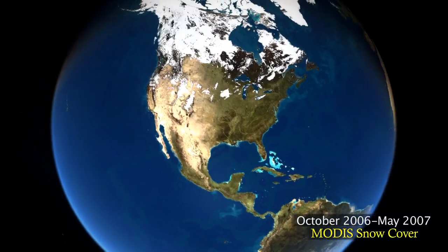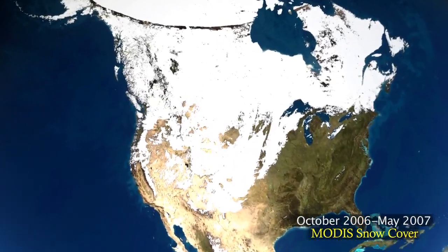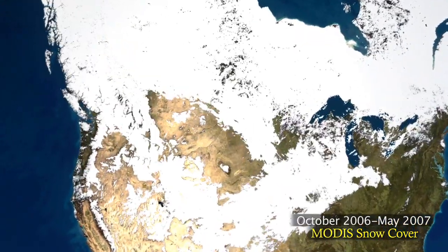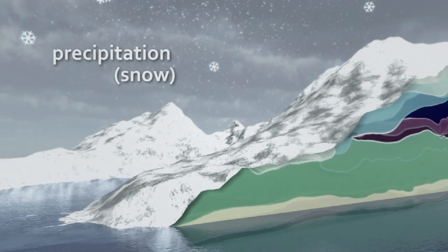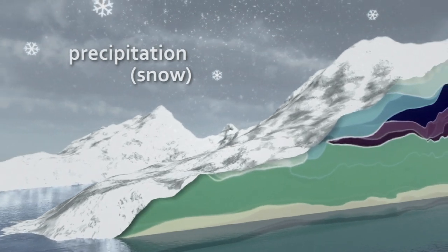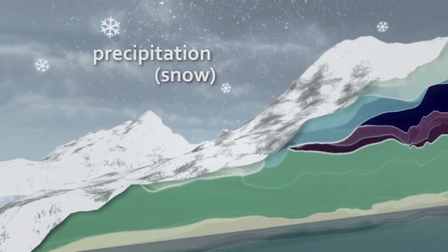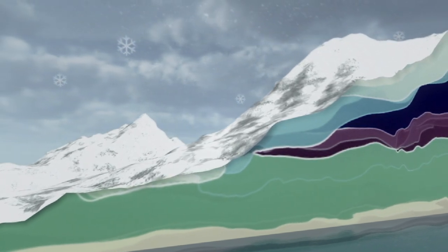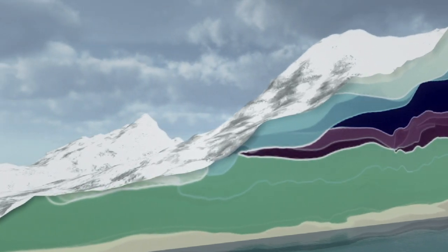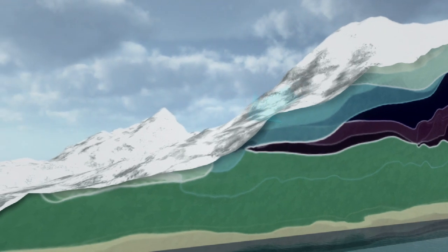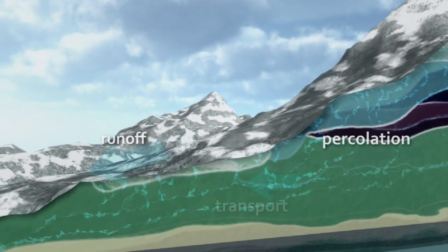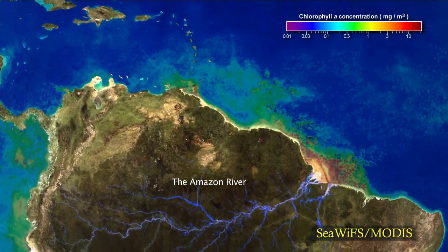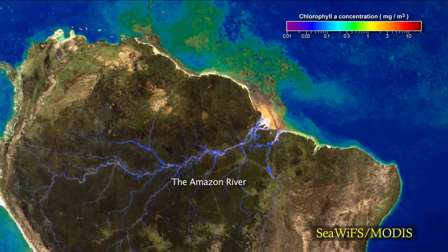Most of the water that falls onto land remains stored there for weeks or more. Snowfall is stored as snowpack or ice. Meltwater and rainfall are stored in lakes and soils. Some of the water is absorbed by plant roots or drains into the water table. Eventually, the water will evaporate to the atmosphere or return to the ocean in streams and rivers, providing a source of nutrient-rich water that supports ocean life.